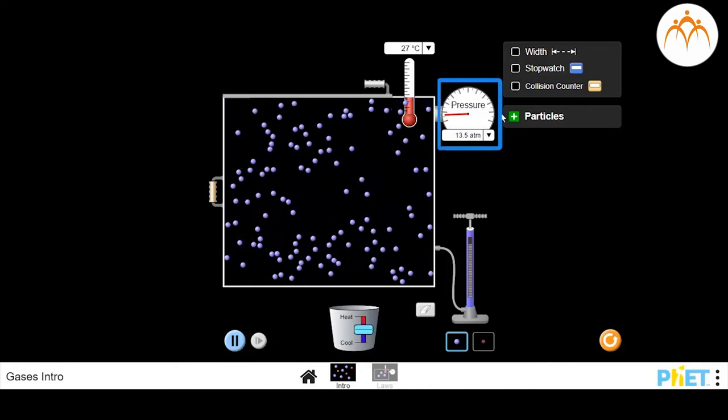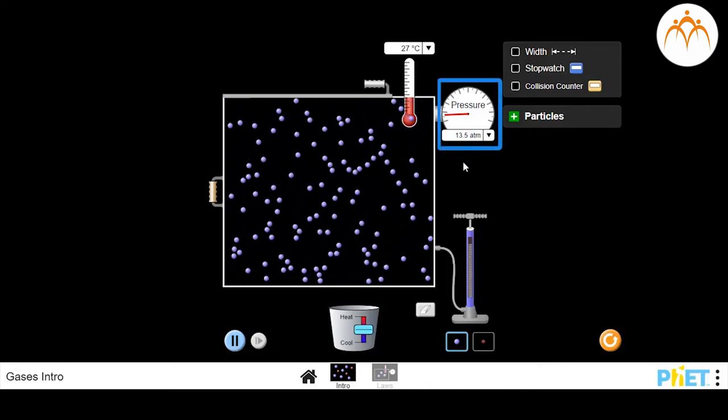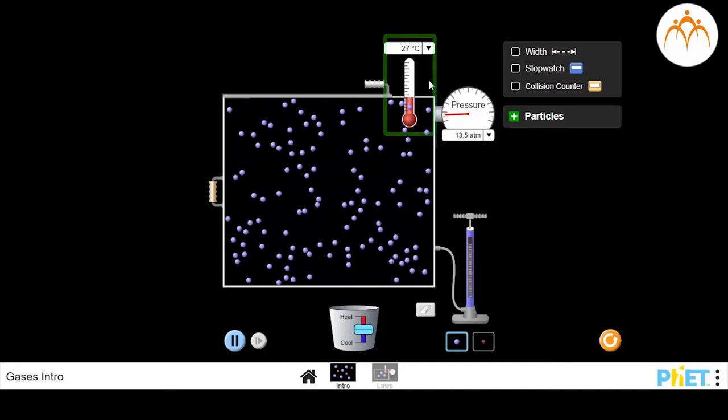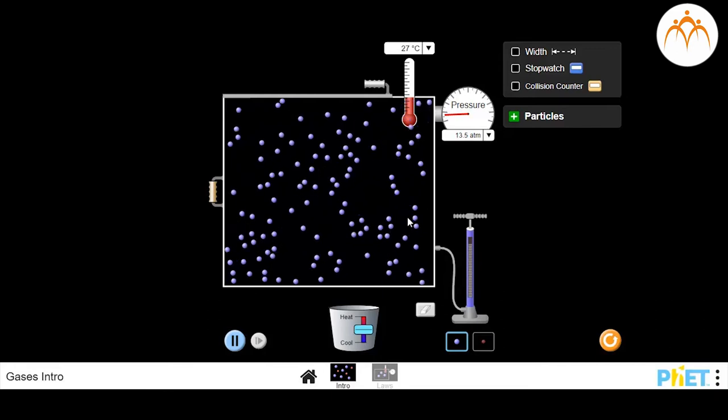Pressure gauge indicates the pressure inside the container. Temperature inside the container can be seen here. Right now, volume is kept constant.